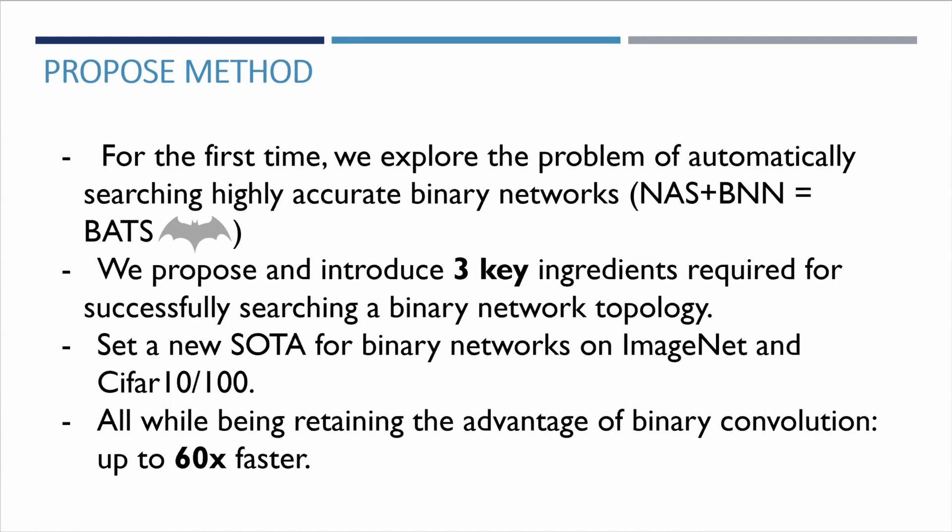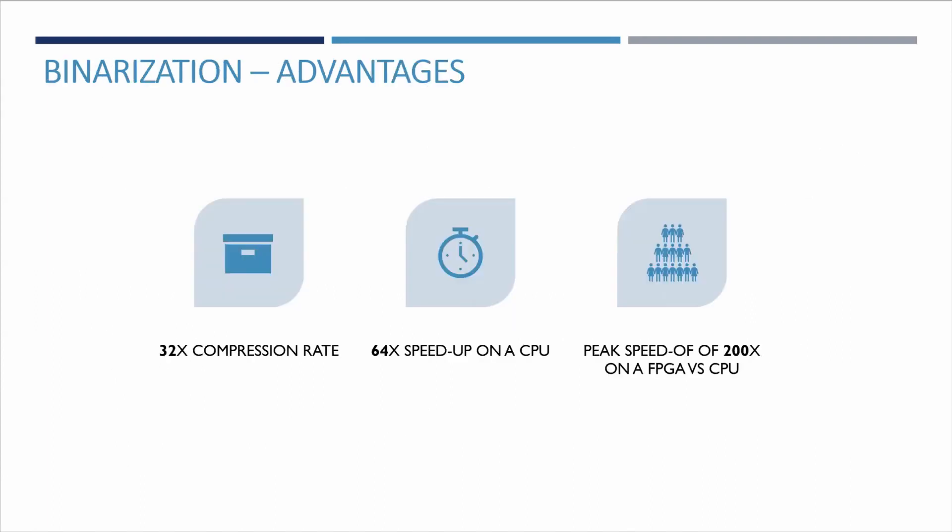As we will later show, our method sets a new state of the art for binary networks on various datasets. Given that binarization is intuitively difficult, why do we care? Well, binary convolutions are up to 64 times faster and 42 times smaller on a modern CPU.